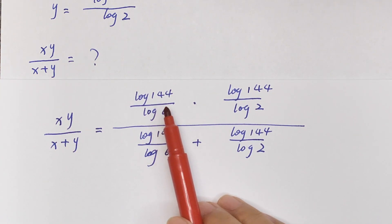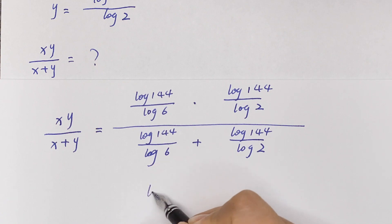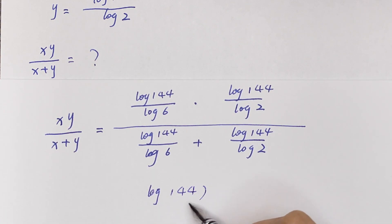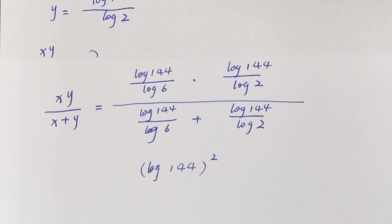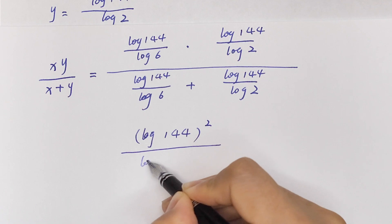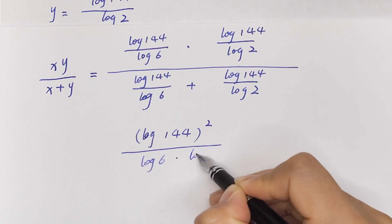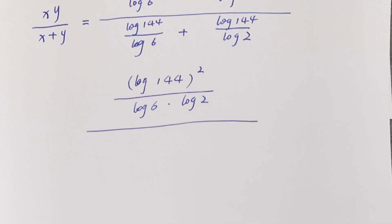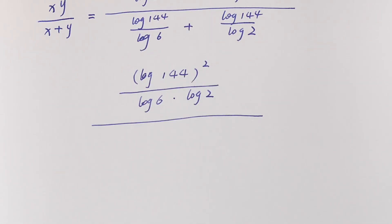In the numerator, this times this, that means log 144 squared divided by log 6 times log 2. At the bottom, we need a common denominator.